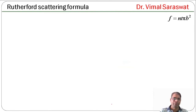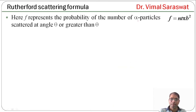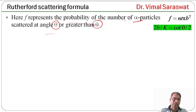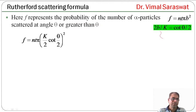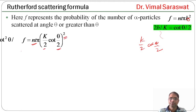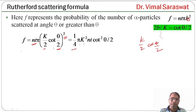Here f = n·t·π·b² represents the probability of the number of alpha particles scattered at angle θ or greater than θ. Since 2b/k = cot(θ/2), we replace b with (k/2)·cot(θ/2), giving f = n·t·π·(k/2·cot(θ/2))², which simplifies to f = (1/4)·π·k²·n·t·cot²(θ/2).